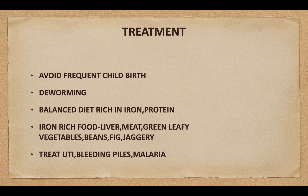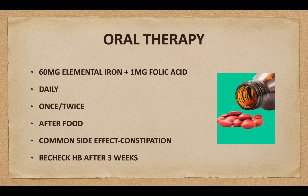Treatment: avoid frequent childbirth; deworming using drugs like albendazole and mebendazole; balanced diet rich in protein and iron; iron-rich food like liver, meat, green leafy vegetables, beans, fig, and jaggery can be advised. Treat urinary tract infection, bleeding piles, and malaria. Oral therapy: 60 mg of elemental iron and 1 mg of folic acid should be advised to all pregnant women daily once or twice after food. Common side effect is constipation. Recheck hemoglobin after 3 weeks.